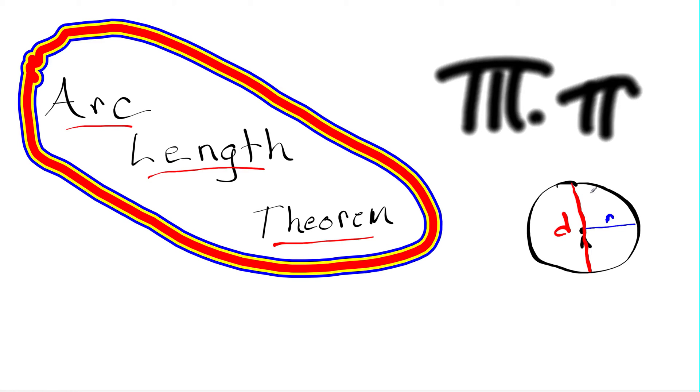So, it's a real quick review. A good thing to know is that a diameter is made up of two radii. Remember, we're studying arc length theorem today. It is everything to do about circles.